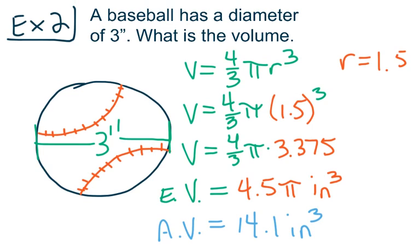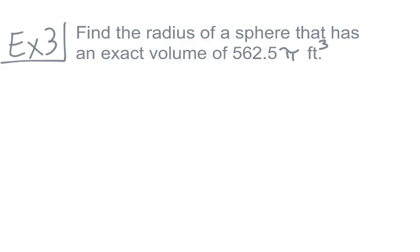Let's look at two more examples. Instead of finding volume when given the radius, we're going to find the radius when we're given the volume. The third example says to find the radius of a sphere that has an exact volume of 562.5 pi feet cubed. Jumping back into our volume formula: volume equals 4 thirds pi times the radius cubed. Our goal is to get radius cubed by itself, then cube root both sides to find the actual radius.